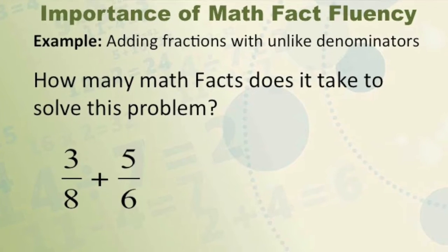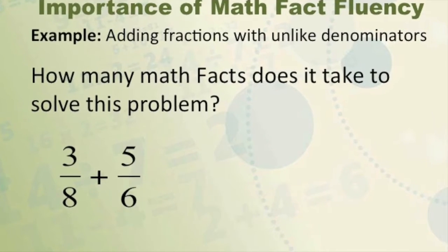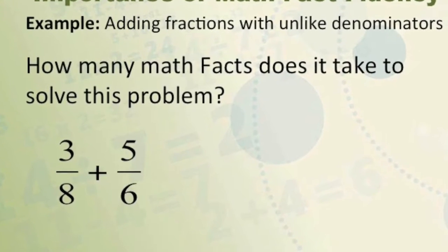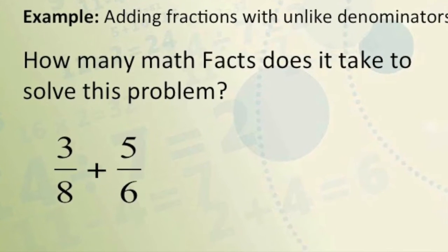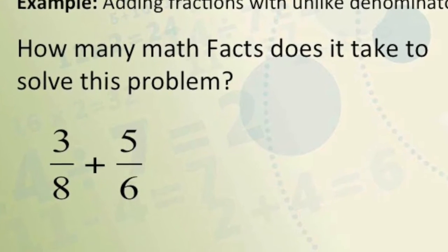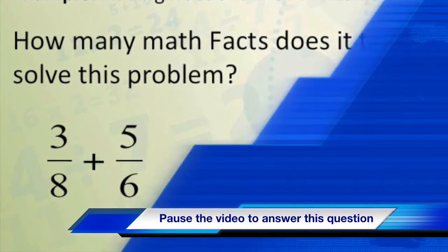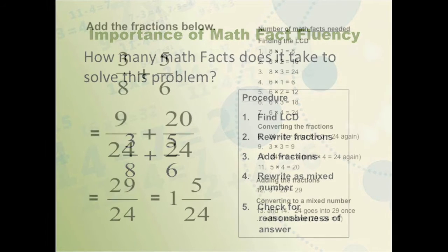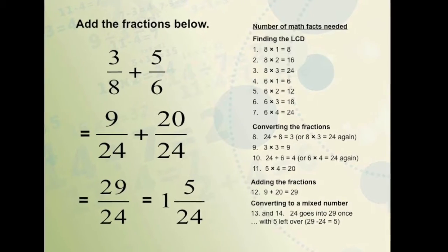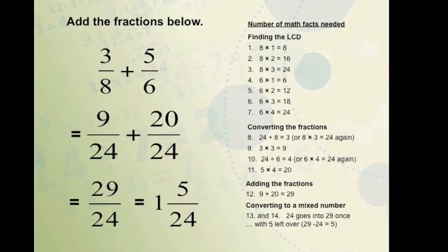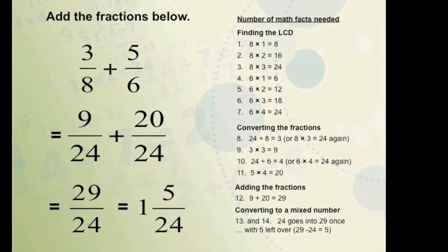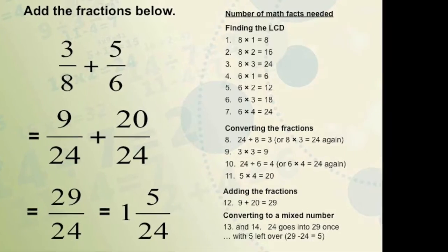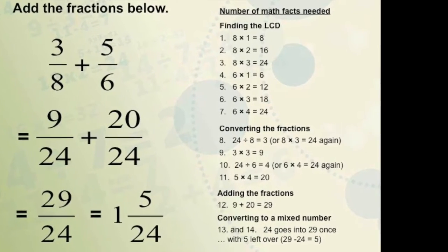Let's see how automaticity plays a role in solving math problems by looking at this addition problem. How many facts do you think it will take to solve this one problem? Most adults will say about five facts, when in fact there are five procedural steps alone. Taking a closer look at those procedures will indicate that there are over 14 facts needed to solve this one addition problem.